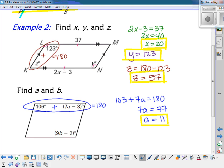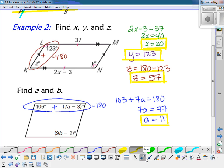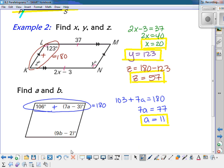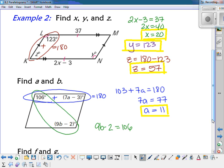And then since these angles are across from each other, I know they're congruent. So 9b minus 2 has to equal 106. So if we add the 2, we get 9b is equal to 108. And so b would have to equal 12.